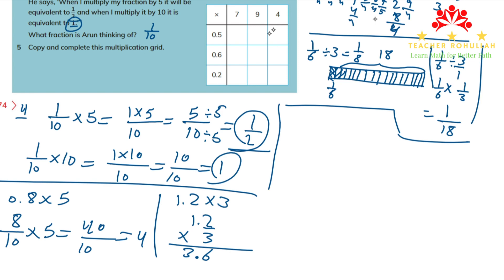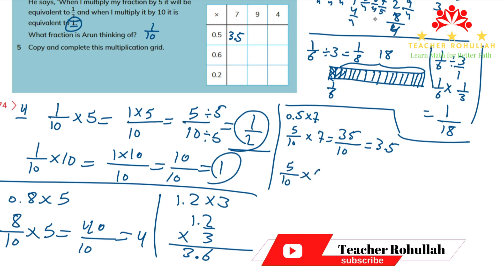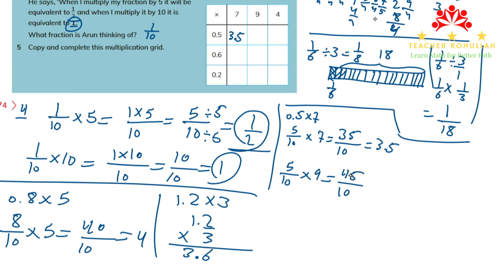For 0.5 times 7: convert to 5-tenths times 7, giving 35 over 10, which equals 3.5. For 0.5 times 9: 5-tenths times 9 gives 45 over 10, which equals 4.5. For 0.5 times 4: 5-tenths times 4 gives 20 over 10, which equals 2.